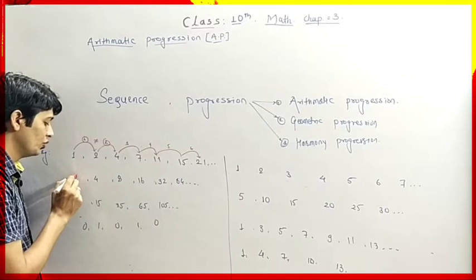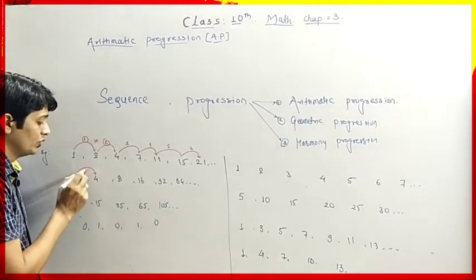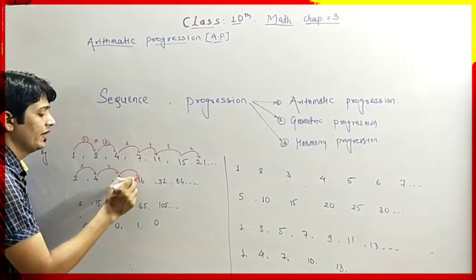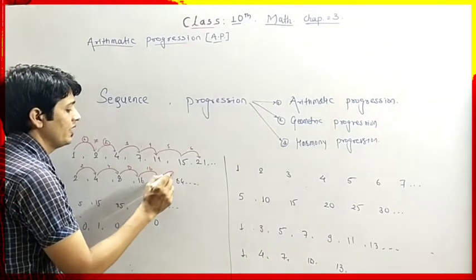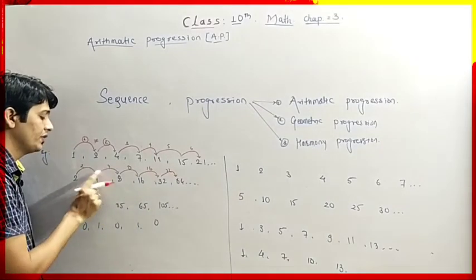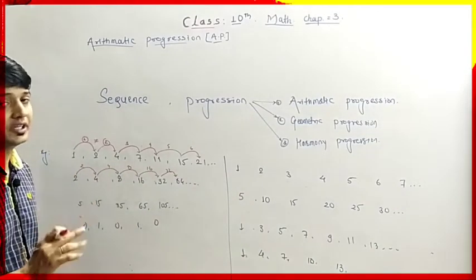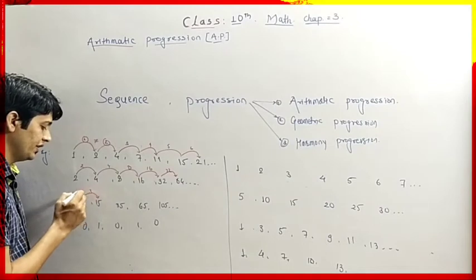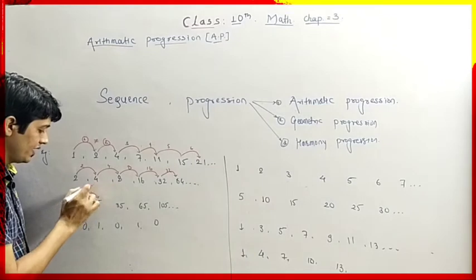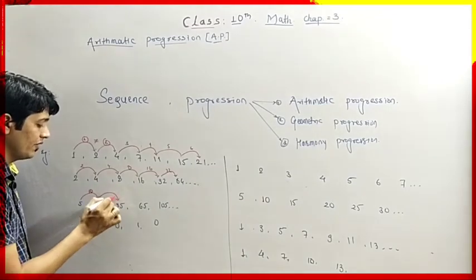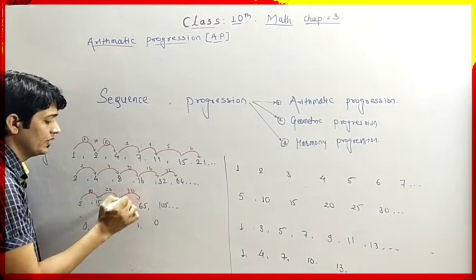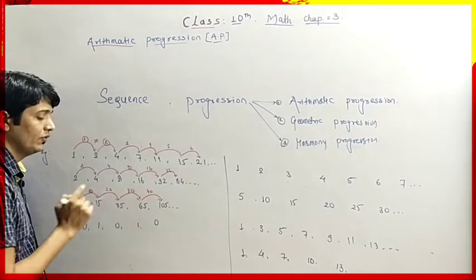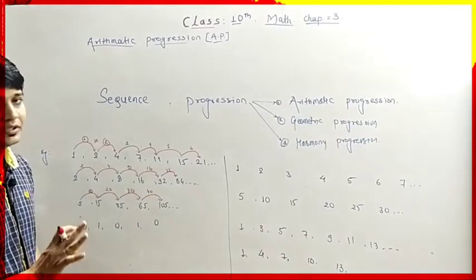In another sequence, we have added 2, then 4, then 8, then 16, then 32 — again the difference between two consecutive terms is not the same. In another sequence, 5 into 3 is 15; we added 10, then 20, then 30, then 40. The differences are 10, 20, 30, and 40 — again the difference between two consecutive terms is not the same.